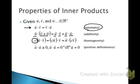This next property is called positive definiteness. If I take the inner product of a vector with itself, I'm always going to get a positive value, or 0. And if u dotted with u is equal to 0, that tells us that the vector u is identically the zero vector.